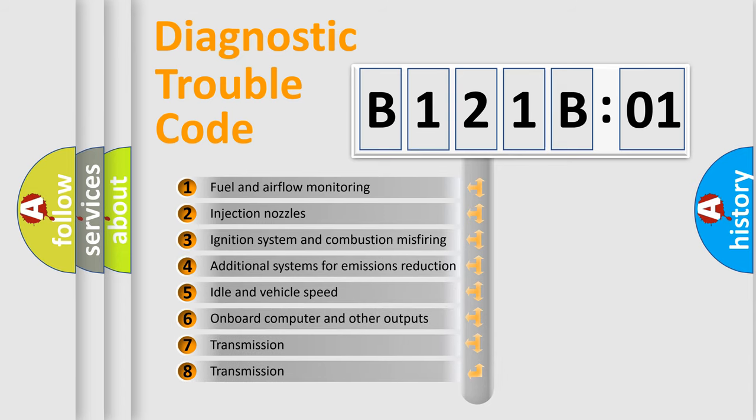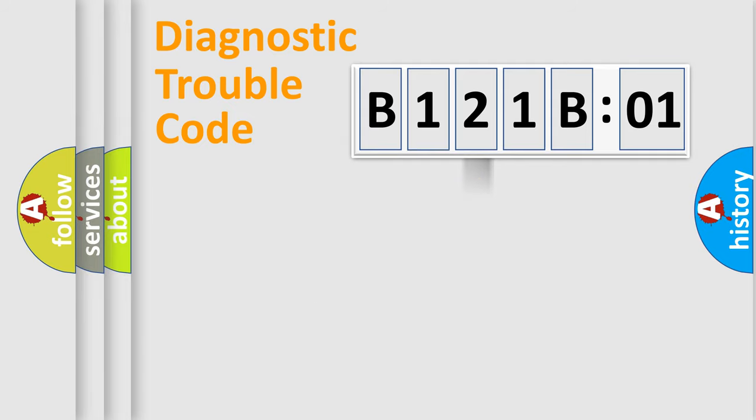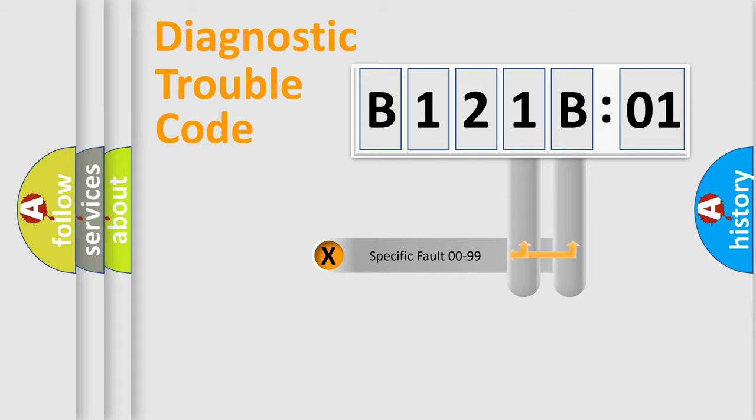The third character specifies a subset of errors. The distribution shown is valid only for the standardized DTC code. Only the last two characters define the specific fault of the group.